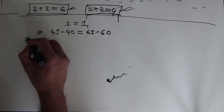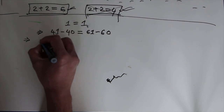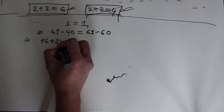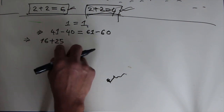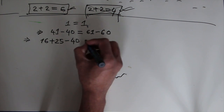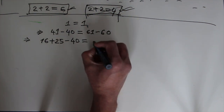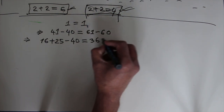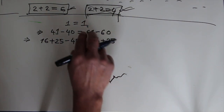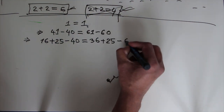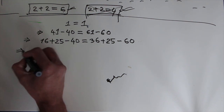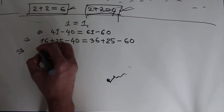I can rewrite the left-hand side as: 16 plus 25 equals 41 minus 40. And on the right-hand side: 36 plus 25 equals 61 minus 60. These remain equal, and now the next mathematical statement — 16 I can expand.